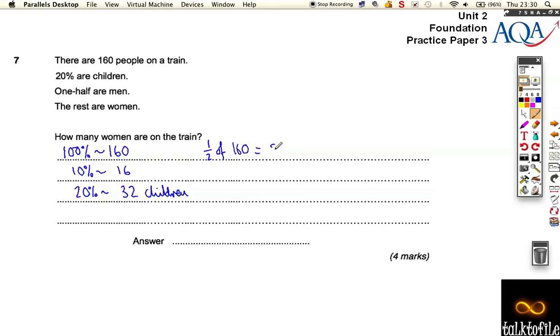Which means there's 80 men. So if we now do the 80 men and 32 children, there's 112.